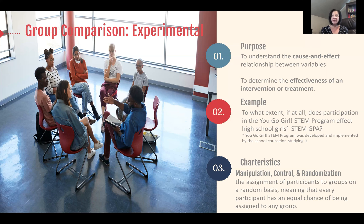Authors like Campbell and Stanley say that if you randomly assign, you can assume group equivalence and don't need a control variable like in the quasi-experimental design. However, Golgol, Borg, and some other researchers say it's better to still include a pretest. So there are some differences of opinion among researchers on this point.